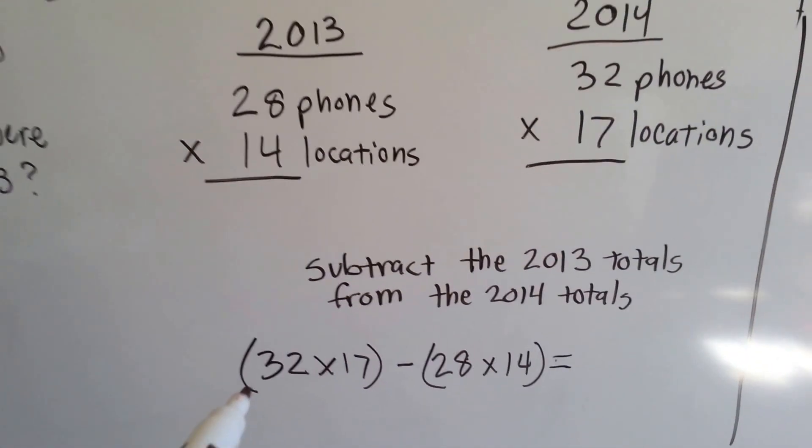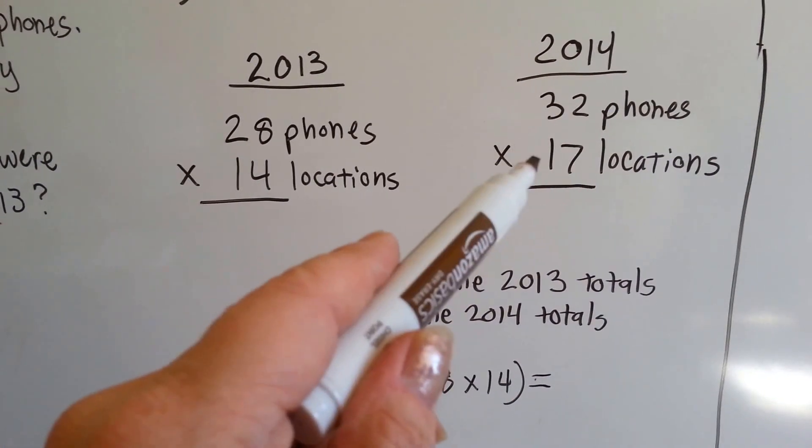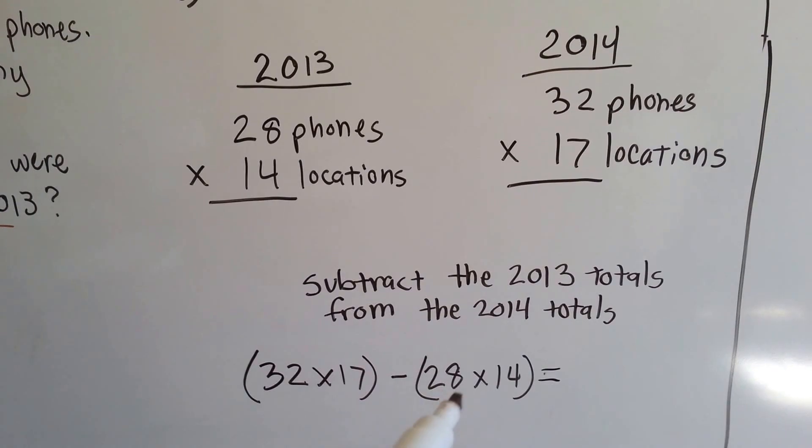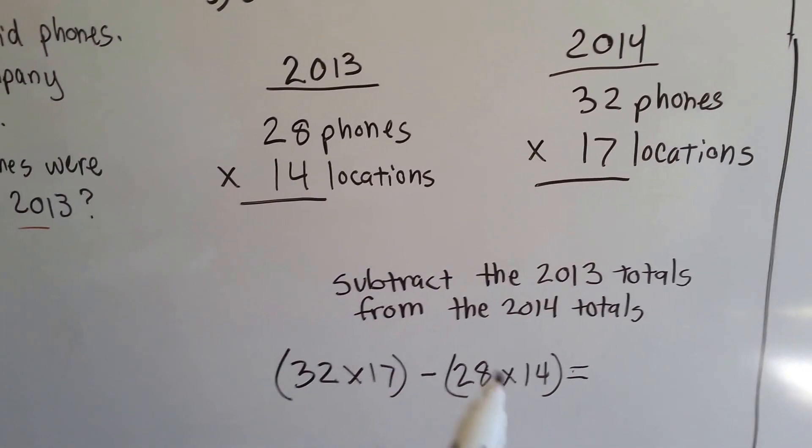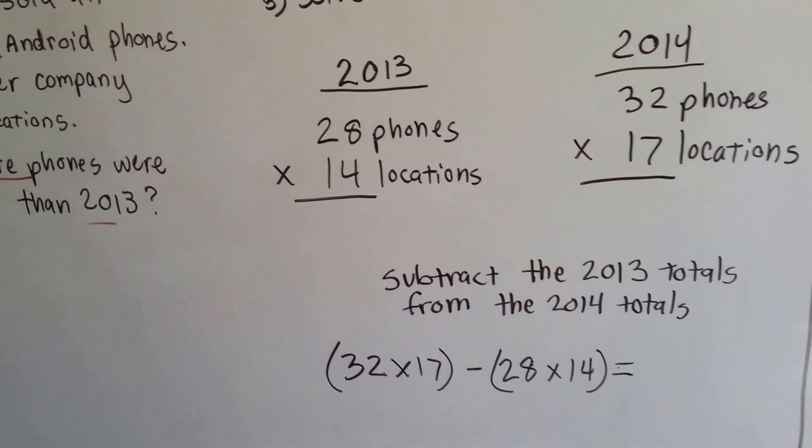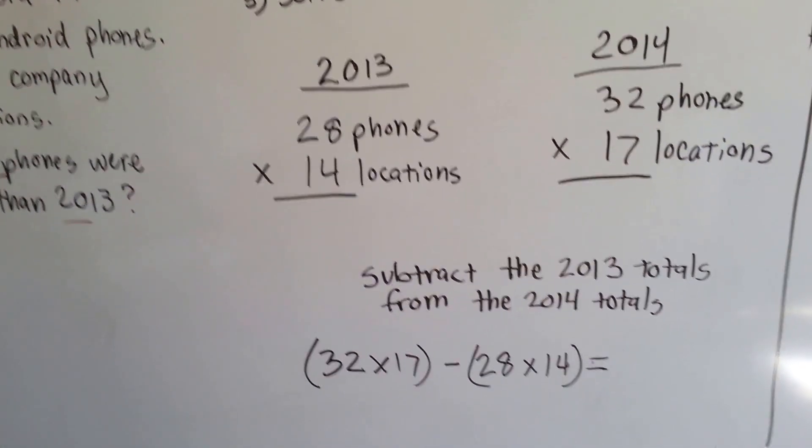So this is what our equation is going to look like. 32 times 17, which is that number, minus 28 times 14, which is that number. And when we do this equation, we'll have our answer. We'll know how many more she sold in 2014 than 2013. So let's do that.